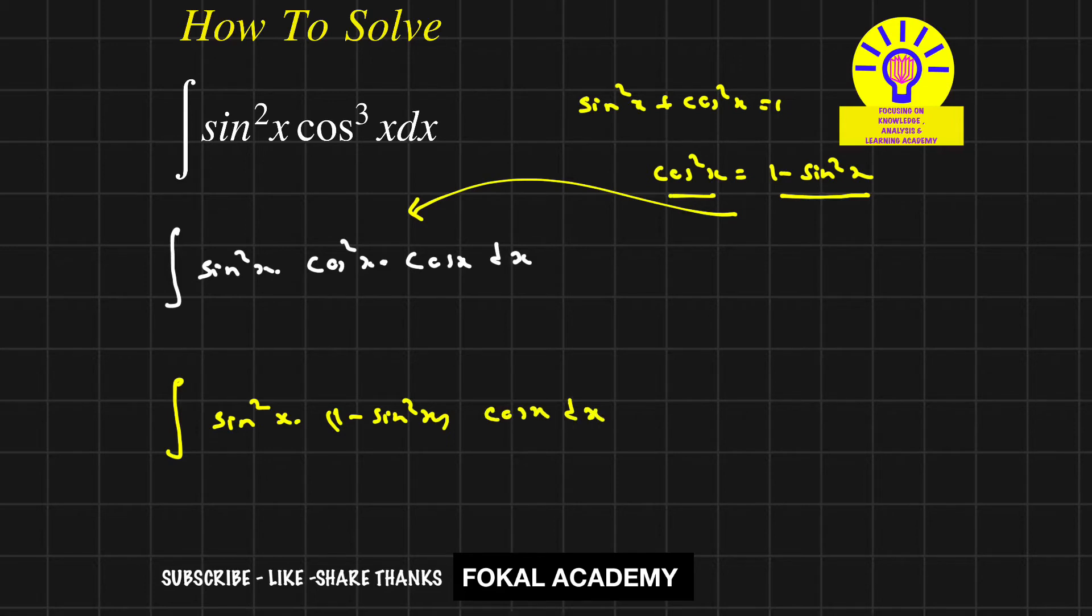Now I'm going to assume that sin x equals t. Differentiating on both sides, we get cos x dx equals dt.